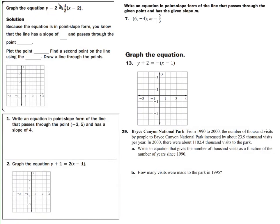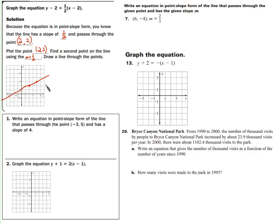Graph this equation in point-slope form. The slope is 1/2 and it passes through the point (2, 2) — because in y - y1 = m(x - x1), the number being subtracted is the x1 and y1. Note: if the equation shows y + 2, that means y1 = -2. Plot the point (2, 2), then find a second point using slope 1/2: up 1 and over 2. Draw a line through the points.